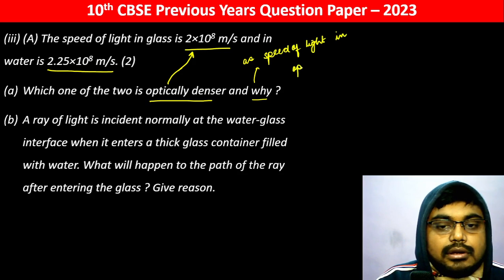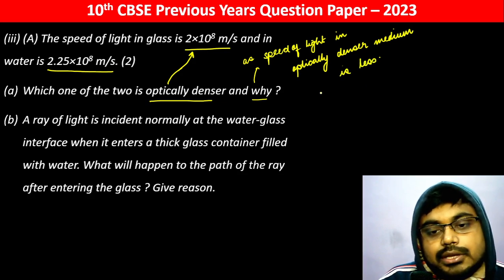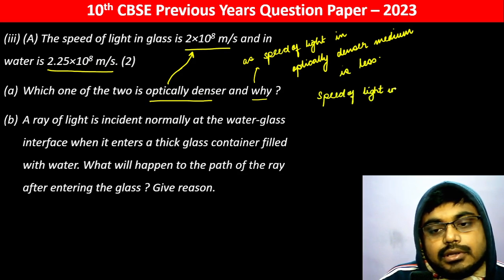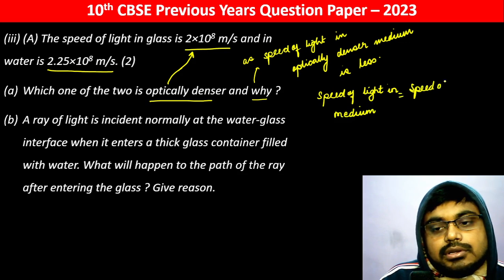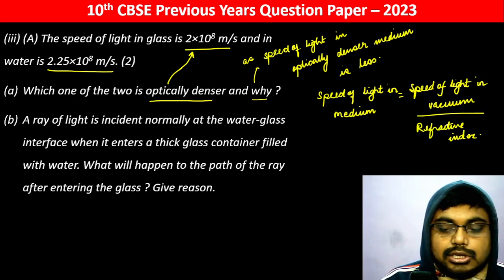As we know, refractive index of a medium n is equal to speed of light in vacuum divided by speed of light in that medium. So whichever medium has a higher refractive index, the speed of light in that medium is lower. Therefore glass is optically denser.